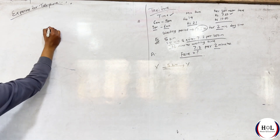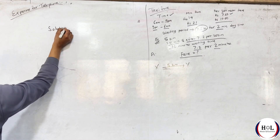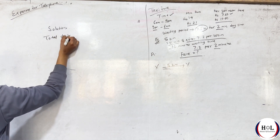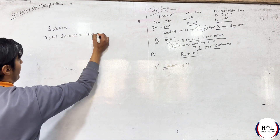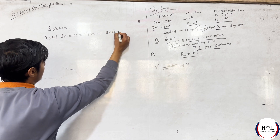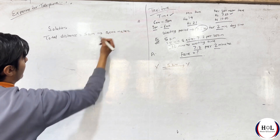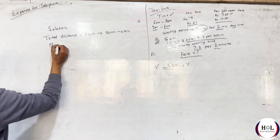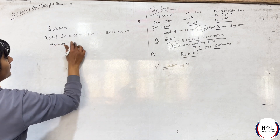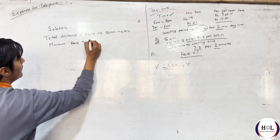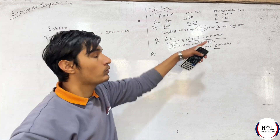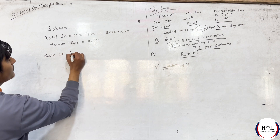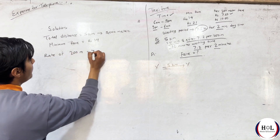Then we will start the solution. The total distance is 2,130 meters. It is 230 to 10 miles. You are waiting for 500 meters. 7.2 per 200 meter rate of taxi. 200 meters equals 7.2 rupees.